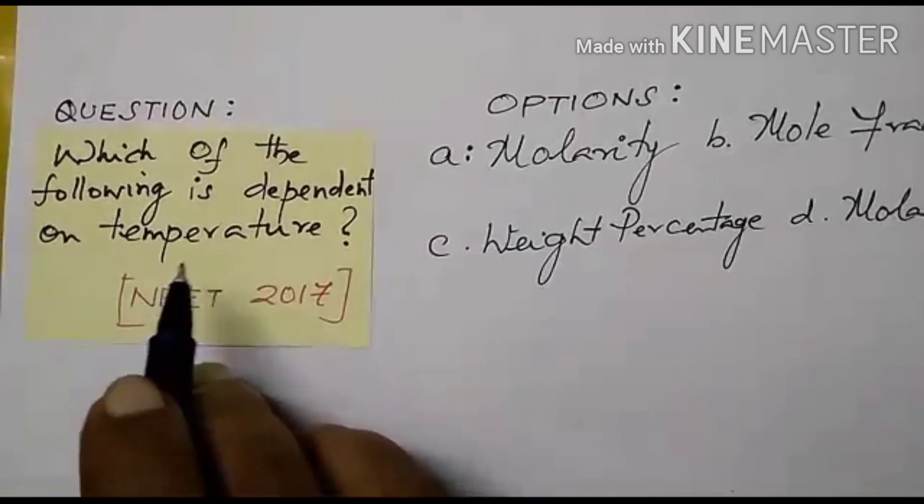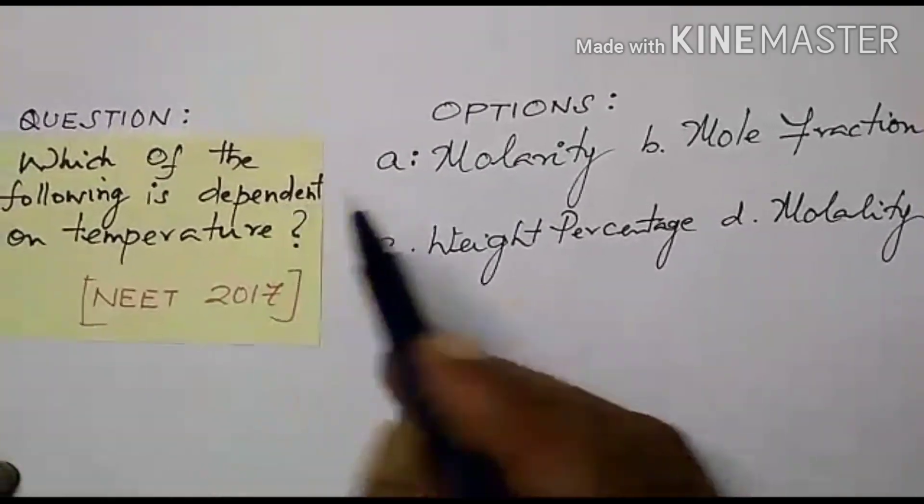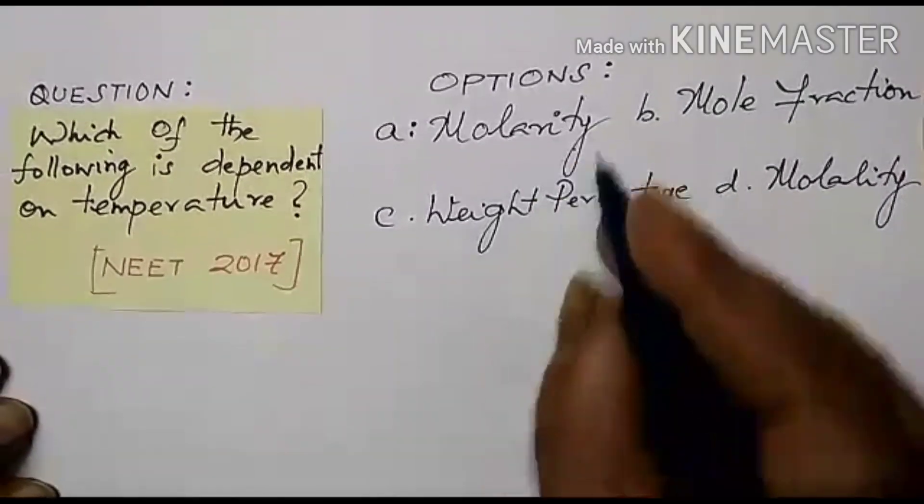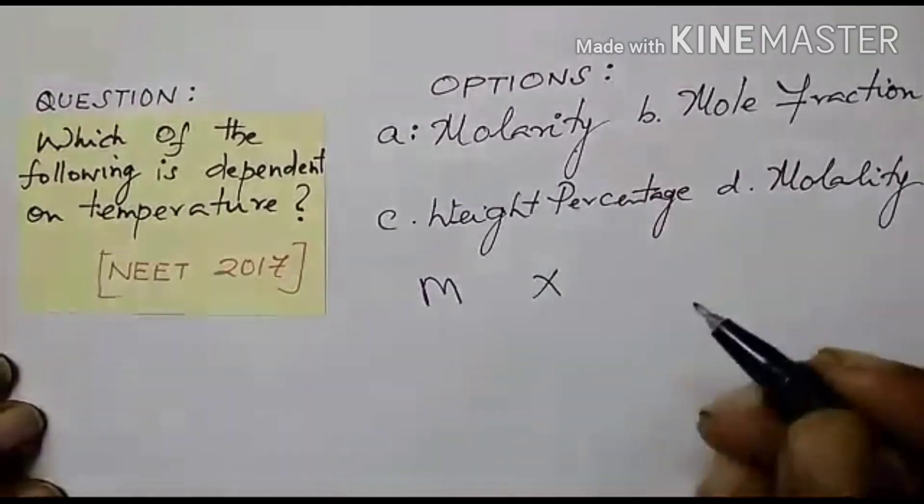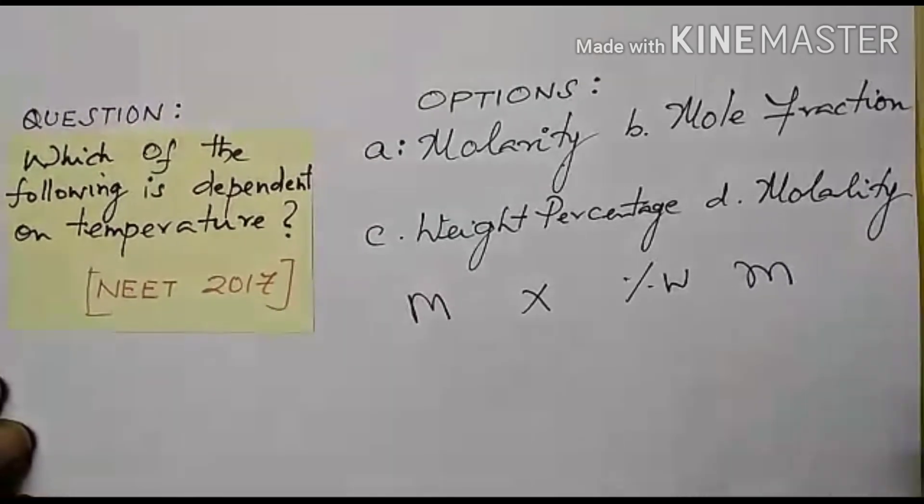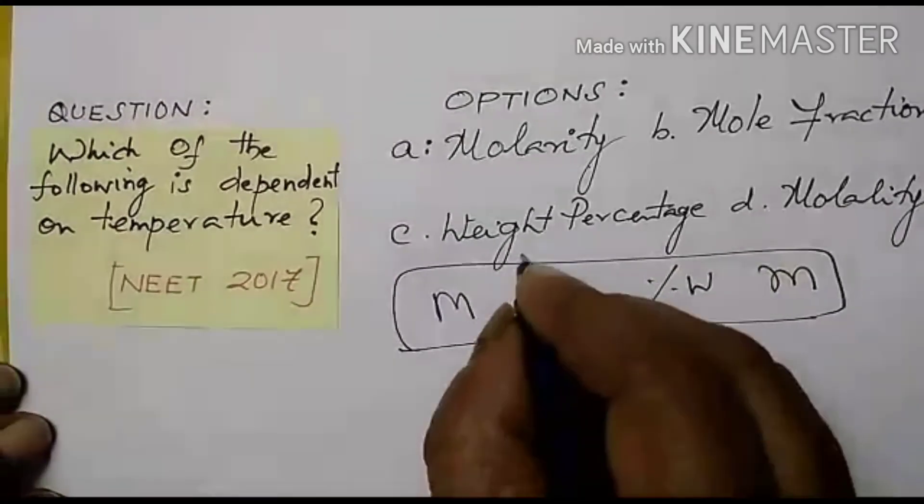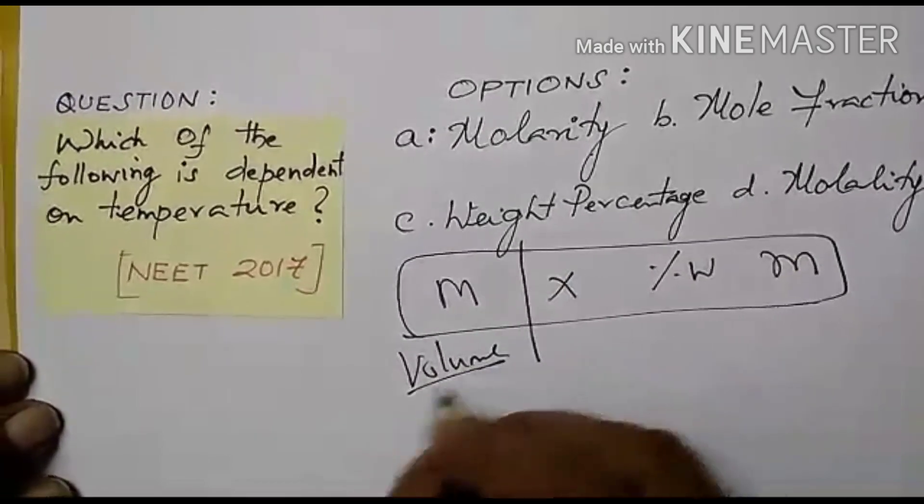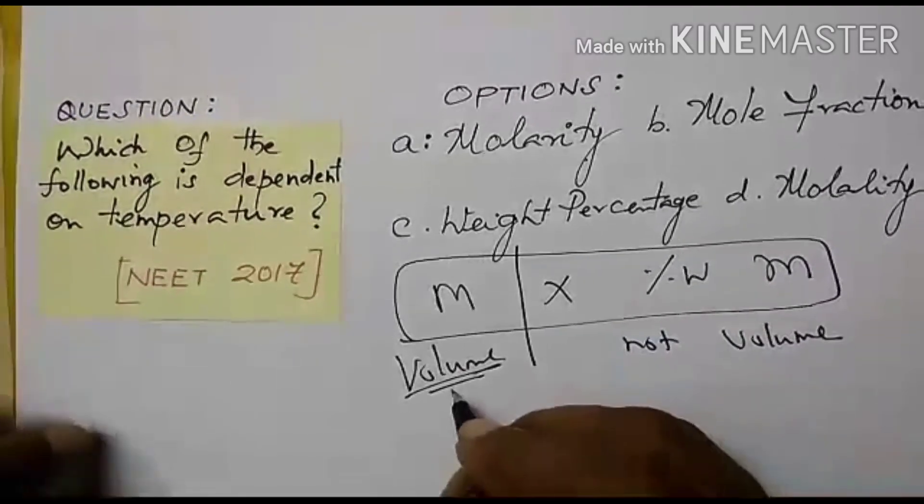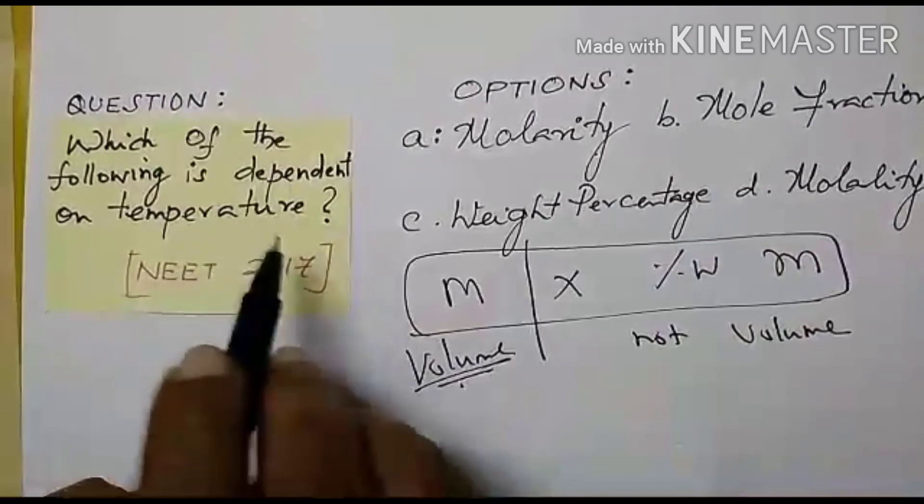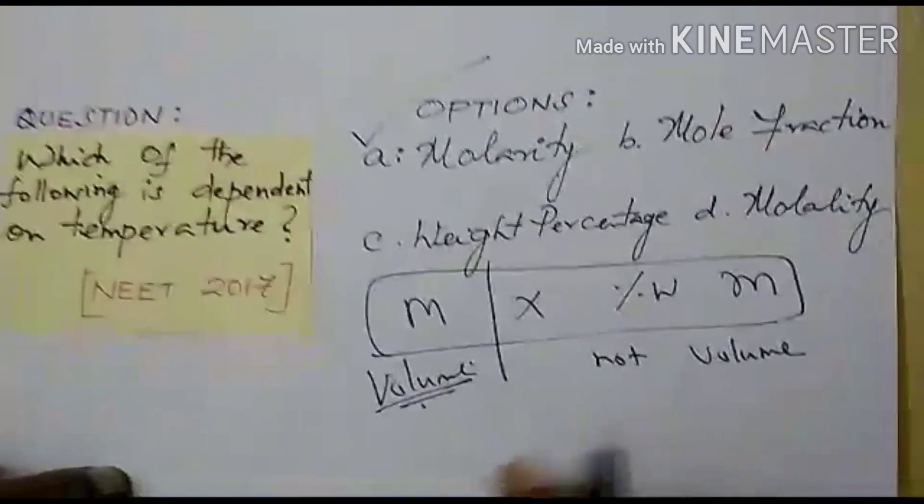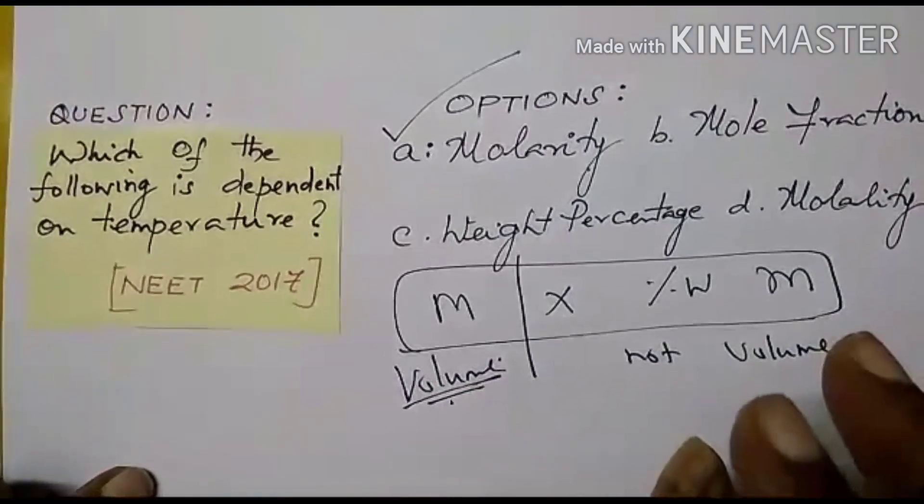Let us go to one more question. Which of the following is dependent on temperature. This is very important question. Depend on temperature. Molarity, mole fraction, weight percentage, molality. Molarity means capital M, mole fraction is X, weight percentage of course, you know the percentage of weight and molality that is called small M. Out of these four factors, this is only based on volume. All these are not related with the volume. So that the volume is dependent upon temperature. Question is dependent upon temperature. So my answer is molality. This one concept can be tested any other direction. Prepare well children. Thank you students.